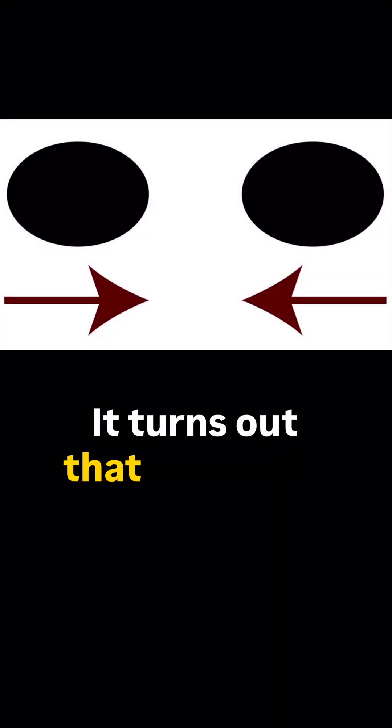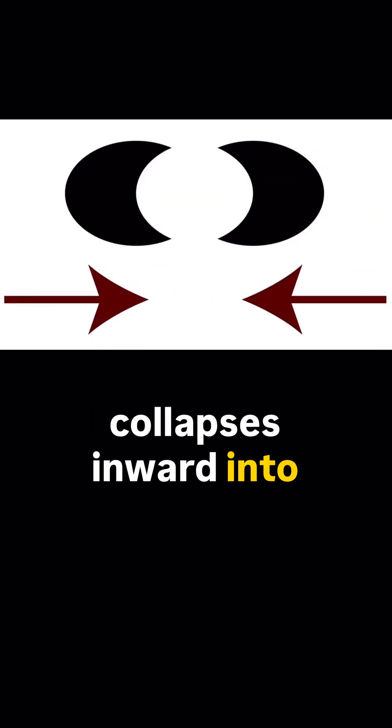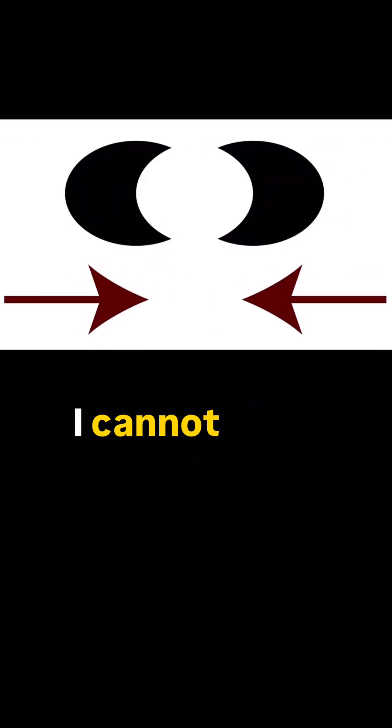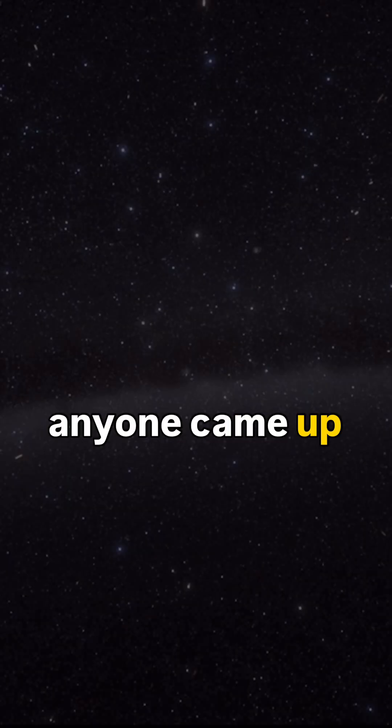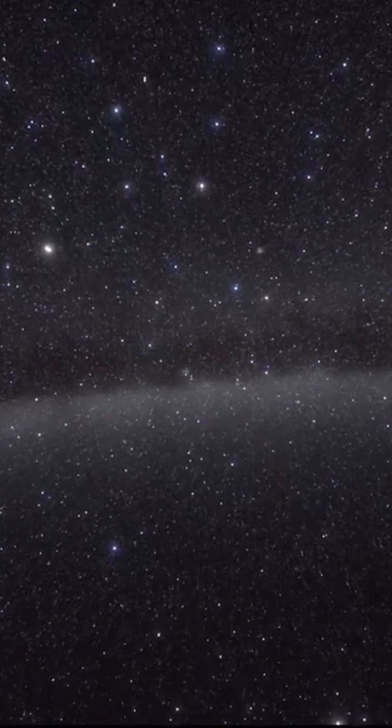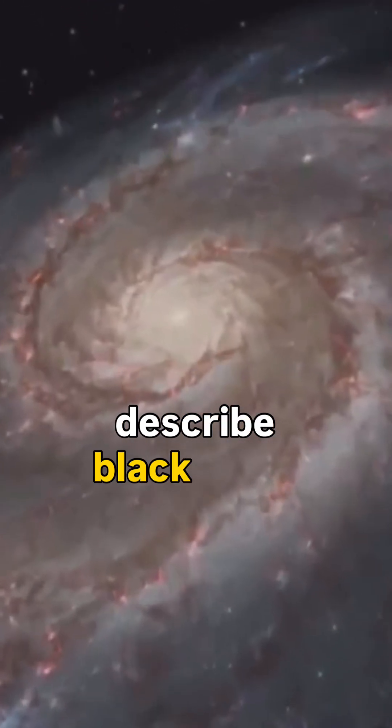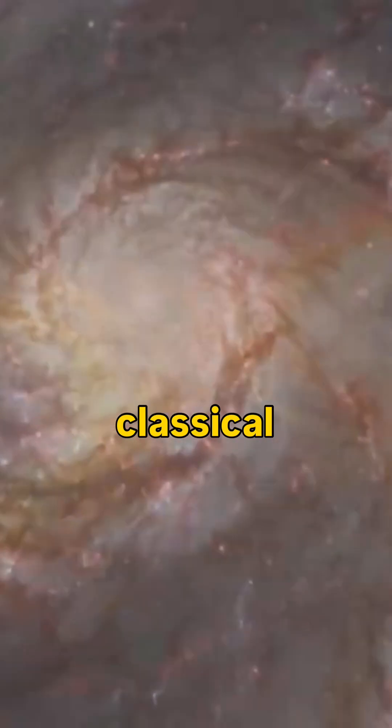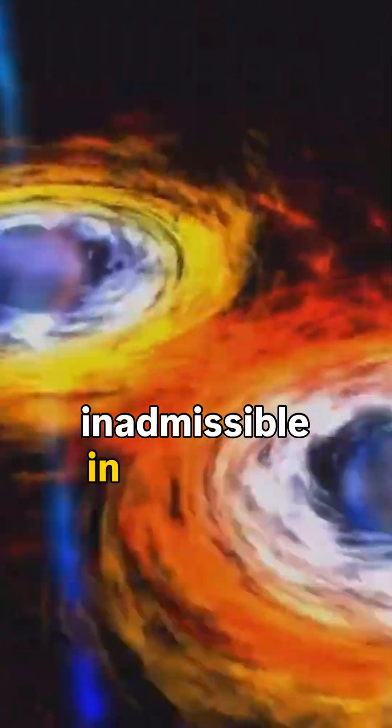It turns out that the event horizon supposedly collapses inward into the black hole. I cannot even imagine how anyone came up with this, but I have been asked such questions repeatedly. In fact, it is an attempt to describe black holes within the bounds of classical physics, which is inadmissible in this case.